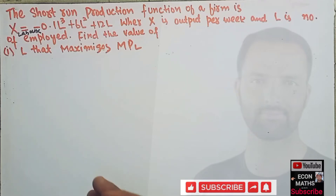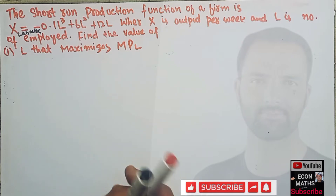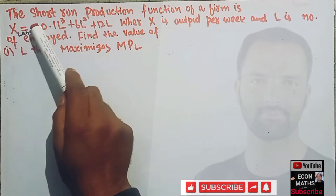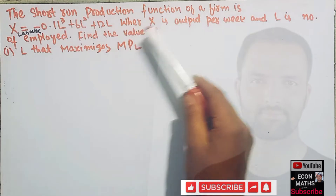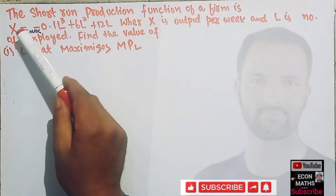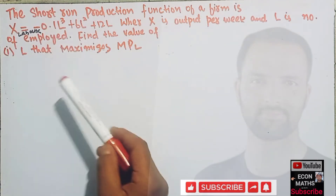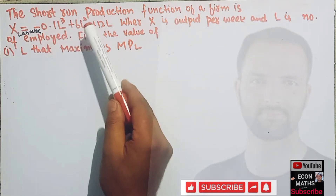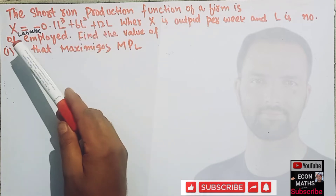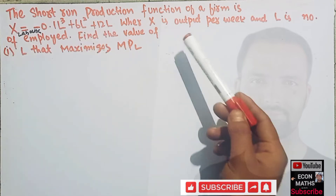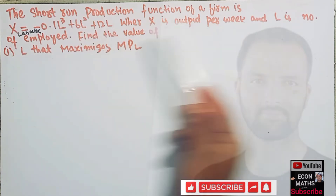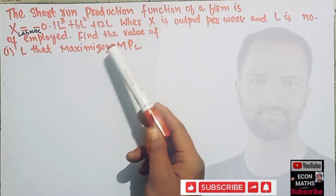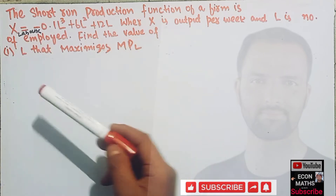In this video we will try to solve a problem in finding the marginal product of labor from a short-run production function. The question is: the short-run production function of a firm is given by X equals minus 0.1L cubed plus 6L squared plus 2L, where X is the output per week and L is the number of labors employed.